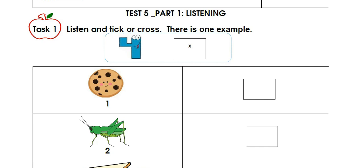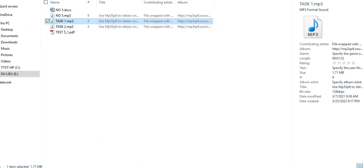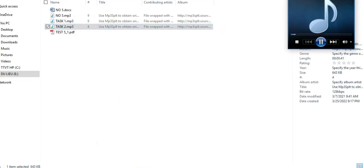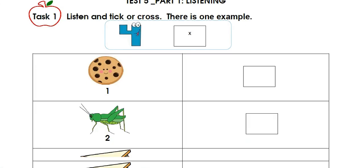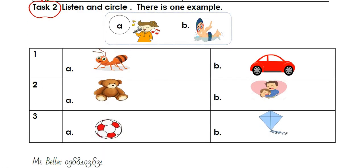This is the end of Task 1. Now we move to Task 2. Task 2. Listen and circle. There is one example. I can sing.